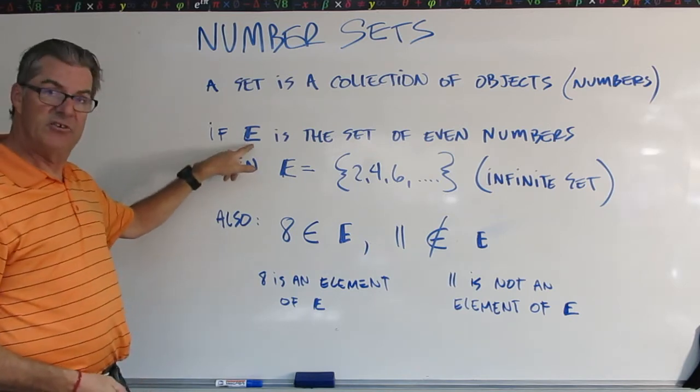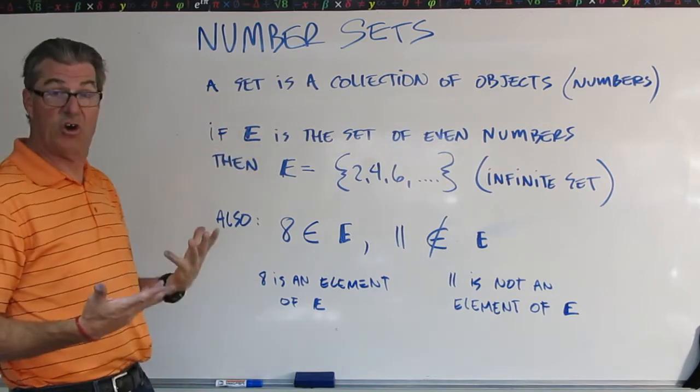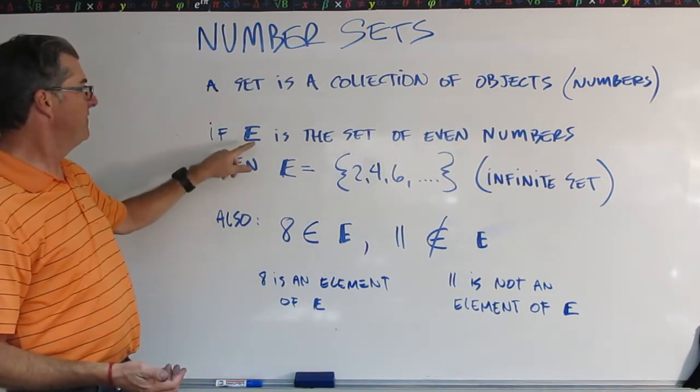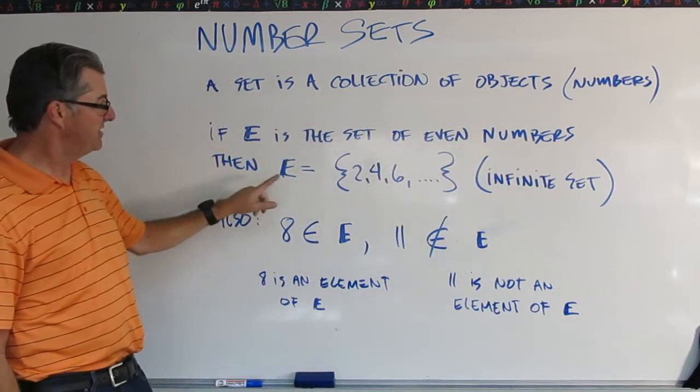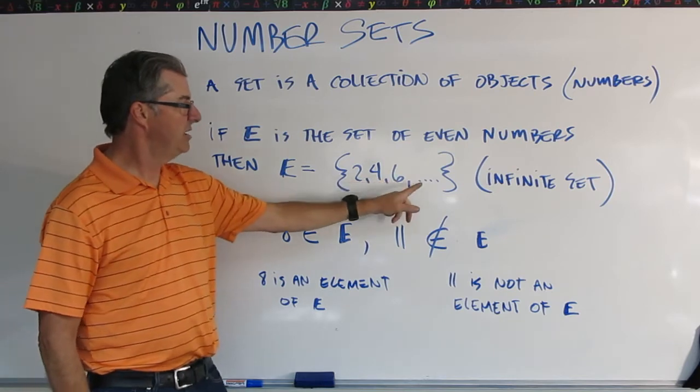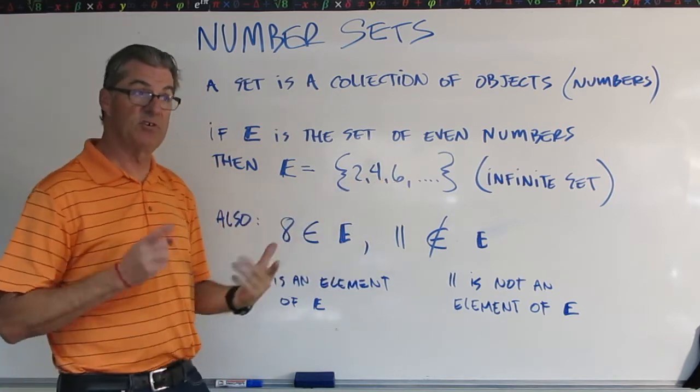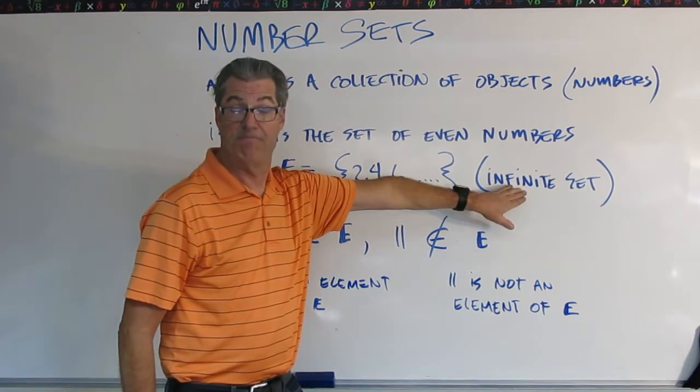If E, so we use sometimes letters to denote what a set is, so there's a set called E. If E is the set of even numbers, then we can write that like this: E = {2, 4, 6, ...} because even numbers go forever in the positive direction. So this is an infinite set.